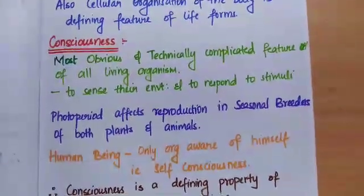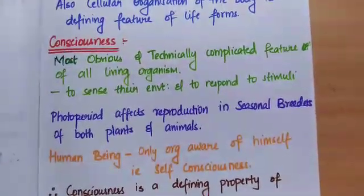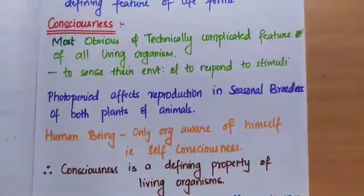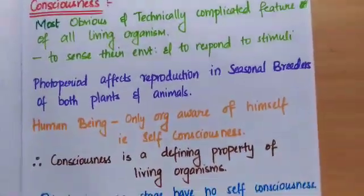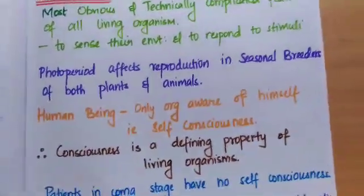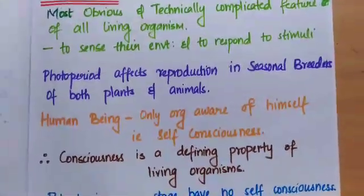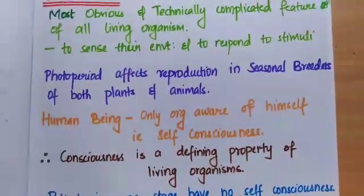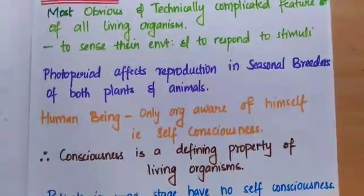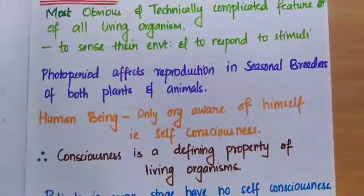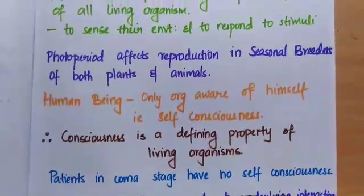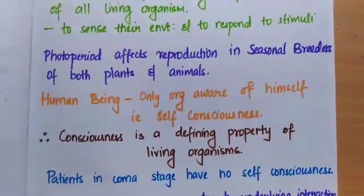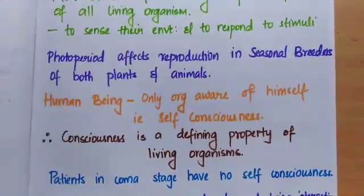When photoperiods affect the reproduction in seasonal breeders of both plants and animals. Human beings are the only organism aware of themselves, that is, they have self-consciousness. Therefore, consciousness is a defining property of living organisms.